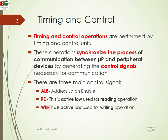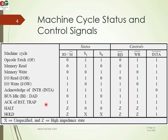Active low signals are represented by a bar. The signals are Read and Write. This is the Machine Cycle Status and Control Signals. Control signals are S0 and S1. Controls also include Read, Write, and INT. There are four machine cycles. Machine cycle status and control signals are different.